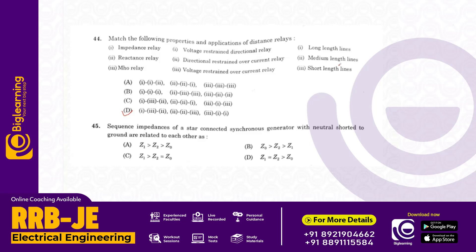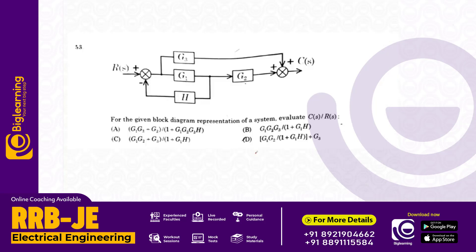Sequence impedance of a star-connected synchronous generator with neutral shorted to ground: Z1 equals Z2 and much greater than Z0. Answer D.